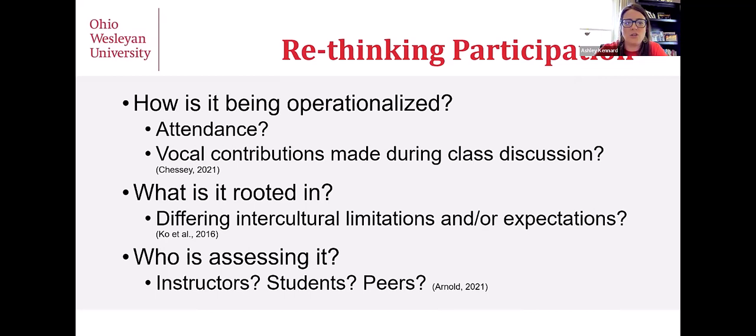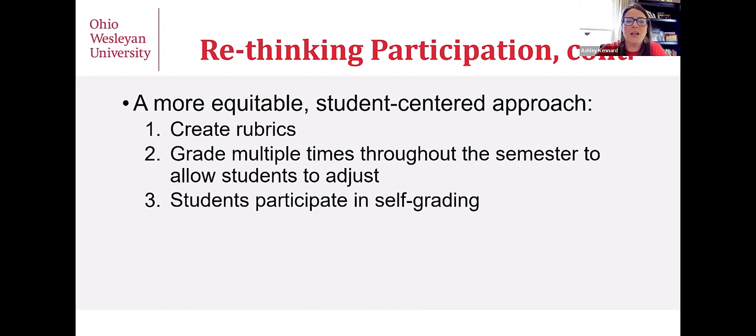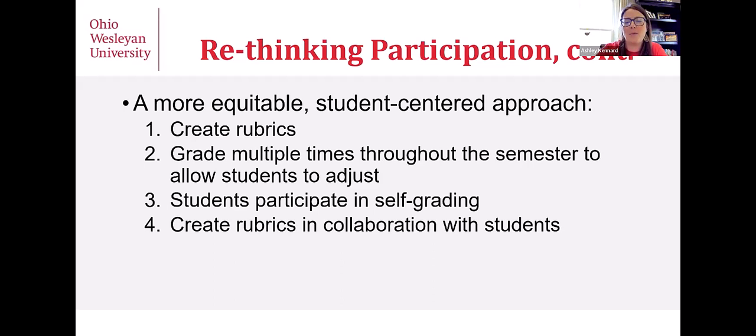Trying to come up with a more equitable, student-centered approach to participation evaluation, I came up with four things I've been doing. I certainly want to get through these and then open it up for conversation — if anybody's doing other things, those ideas are absolutely welcome. Those four things are: creating rubrics, grading multiple times throughout the semester, having students participate in self-grading, and creating those rubrics in collaboration with students.